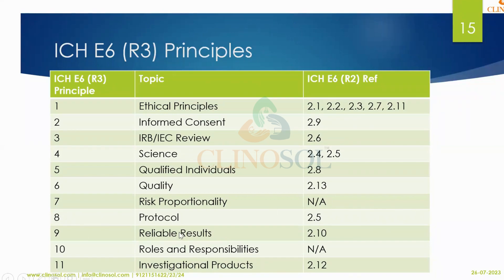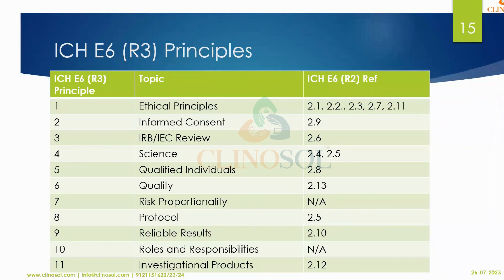Reliable results — that trial results should be accurate and verifiable (previously section 2.10) — become the ninth principle. Roles and responsibility, which was not present in E6 R2, is newly added. Investigational product (previously the 12th principle — that it must be manufactured per GMP and used per GCP) becomes the 11th principle. In total, all 13 principles have been restructured into 11, with two new principles added: risk proportionality and roles and responsibility.